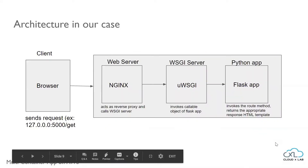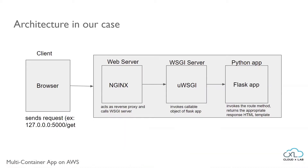In our case, the architecture looks something like this. We don't need to configure the Nginx server. We will use a container which uses Nginx and UWSGI for Flask applications. The only thing we need to do is to tell the UWSGI where the callable object of our Flask app is located. When the browser sends a request, the request invokes the Nginx web server, which acts as a reverse proxy and invokes the UWSGI server.